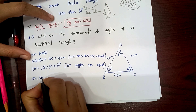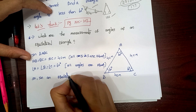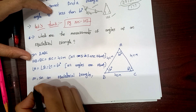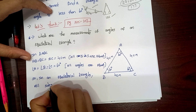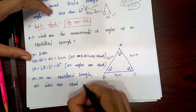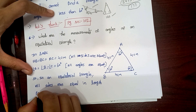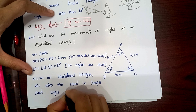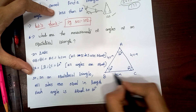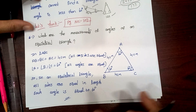In an equilateral triangle, all sides are equal in length and each angle is equal to 60 degrees. So the answer is 60 degrees. That's it — this problem is complete.